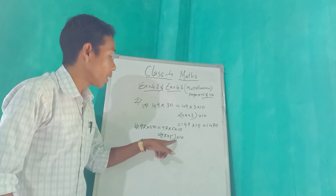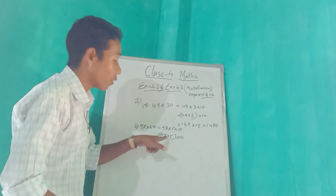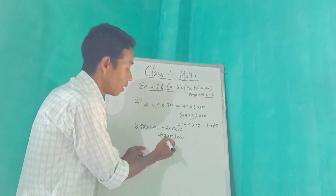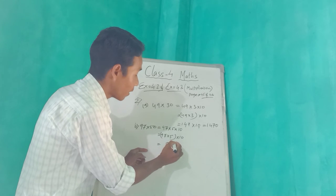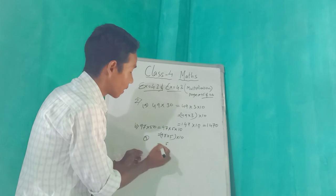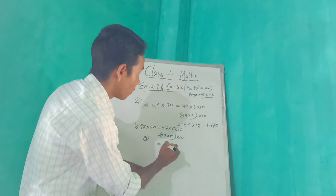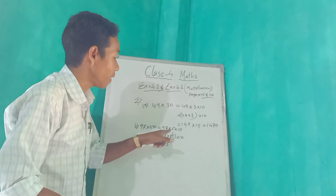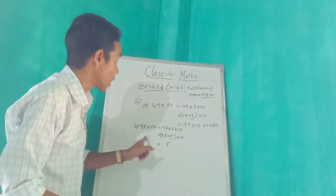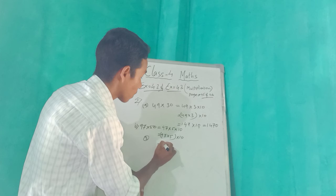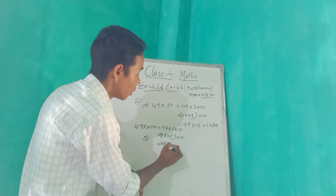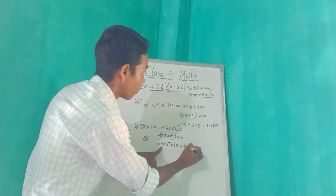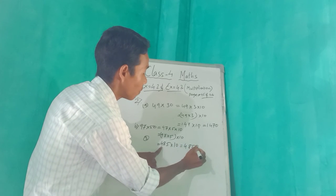97 into 5 into 10 — we do 97 into 5 first. 5 sevens are 35, write 5 carry 3; 5 nines are 45, plus 3 is 48. So 97 into 5 equals 485. Then 485 into 10 — add a 0 — equals 4850. This is our answer.